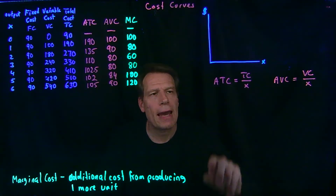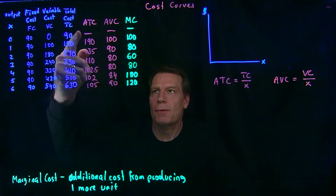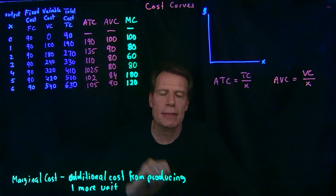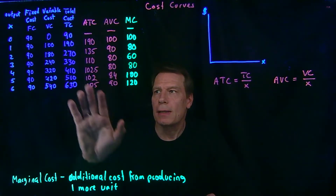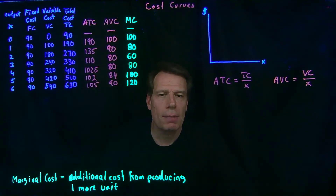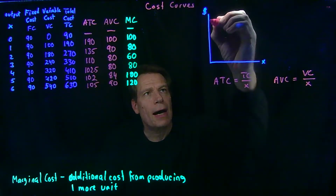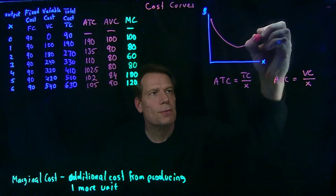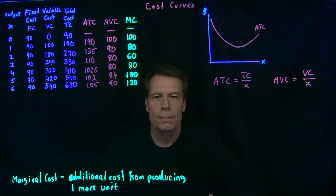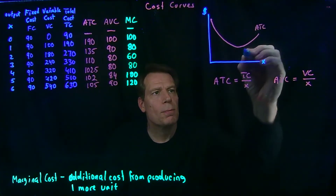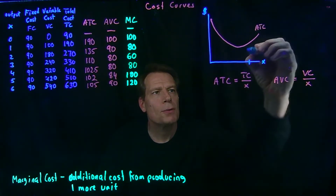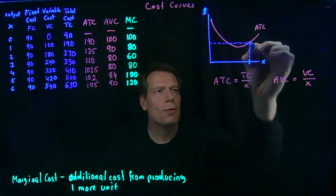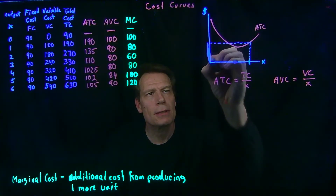Let's start with the average total cost. If we look at this average total cost column, we see it starts high, it falls, and eventually it rises again. So at least for a firm that has costs described by a table like this, we start with a high average total cost, it falls as we produce more, but eventually it starts rising again. Now suppose the firm is producing this much output — we can use the average total cost curve to read off what the average total cost is, given it's producing that much. It's this vertical distance.